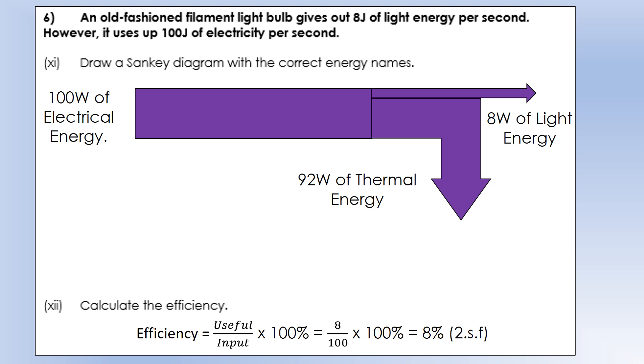We can also calculate efficiency using power. We've got 8 watts divided by 100 watts times 100%, and we get exactly the same efficiency, 8%. So we can calculate and draw Sankey diagrams using either power or energy. It doesn't actually matter. It works the same in both cases. That completes this video on Sankey diagrams and efficiency.